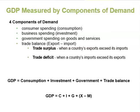When a country's exports are larger than its imports, we have a trade surplus. When a country's imports exceed exports, we have a trade deficit. Consumption expenditure by households is the largest component of GDP, accounting for about two-thirds of GDP in any year in the United States.